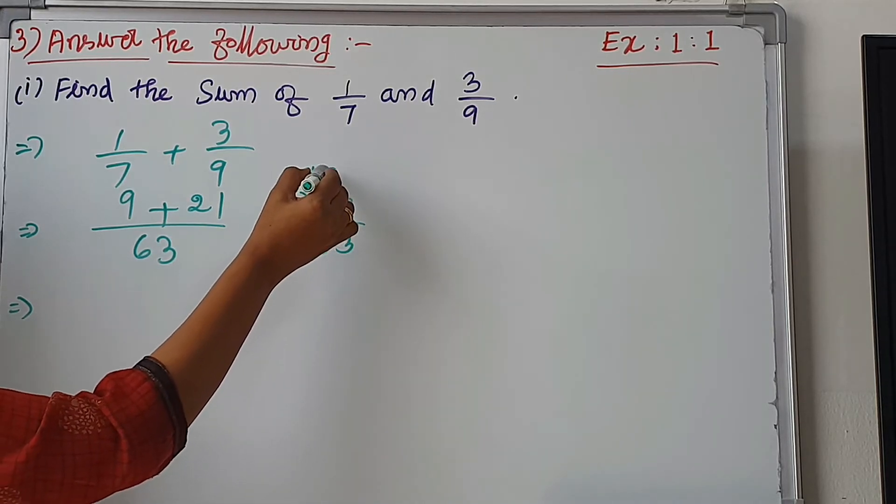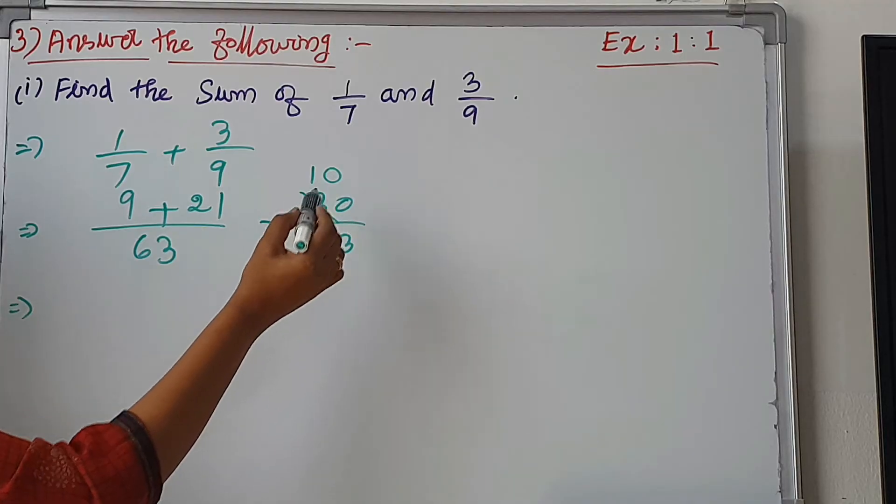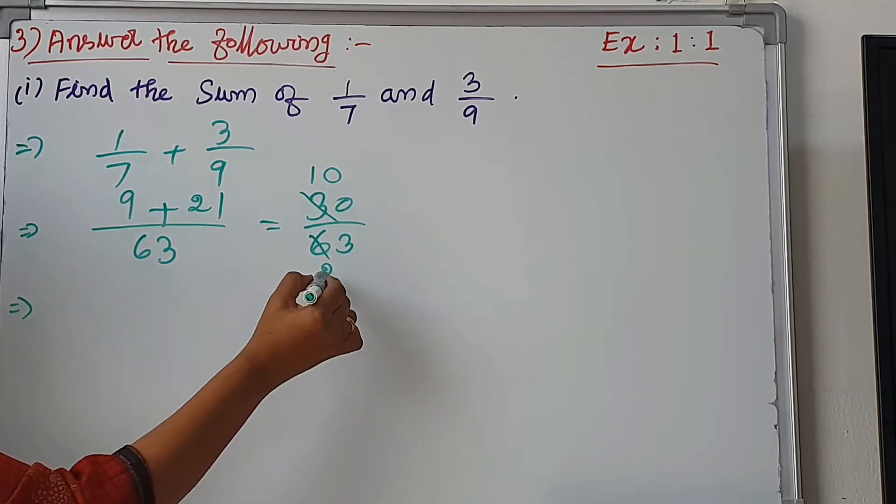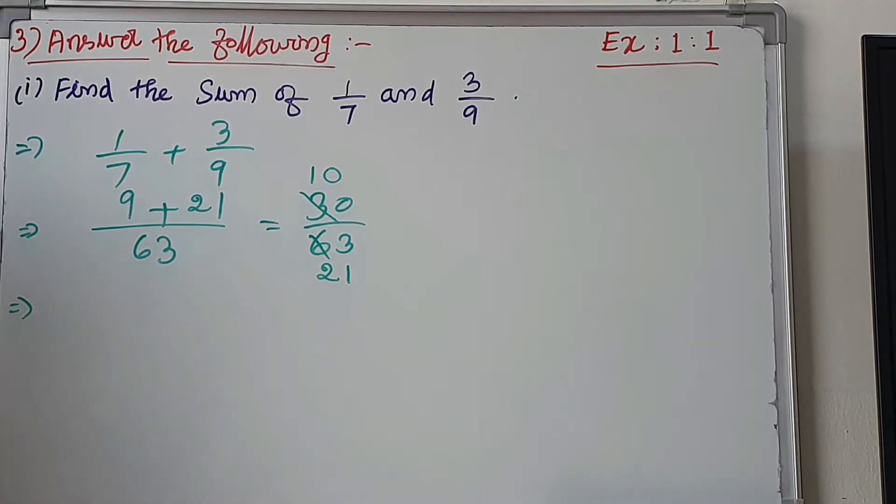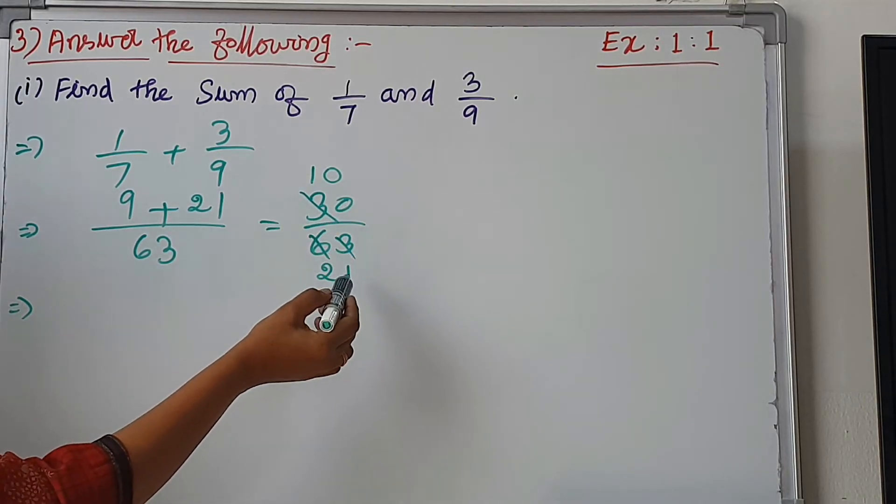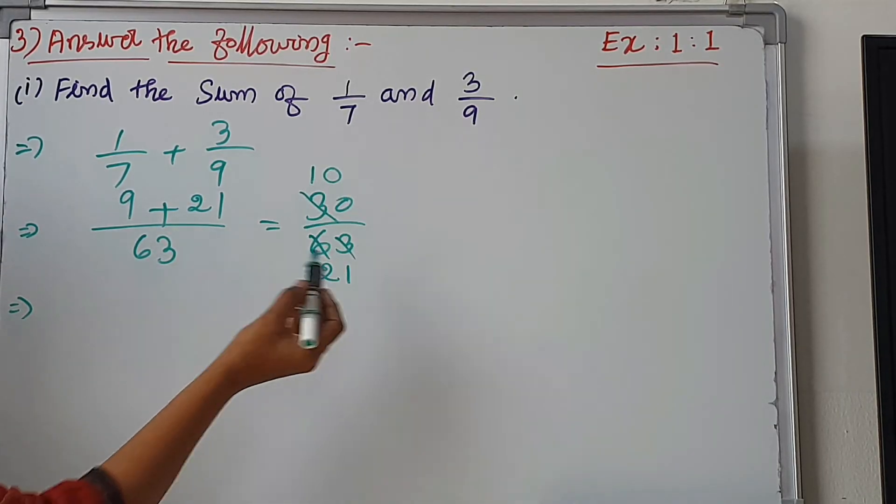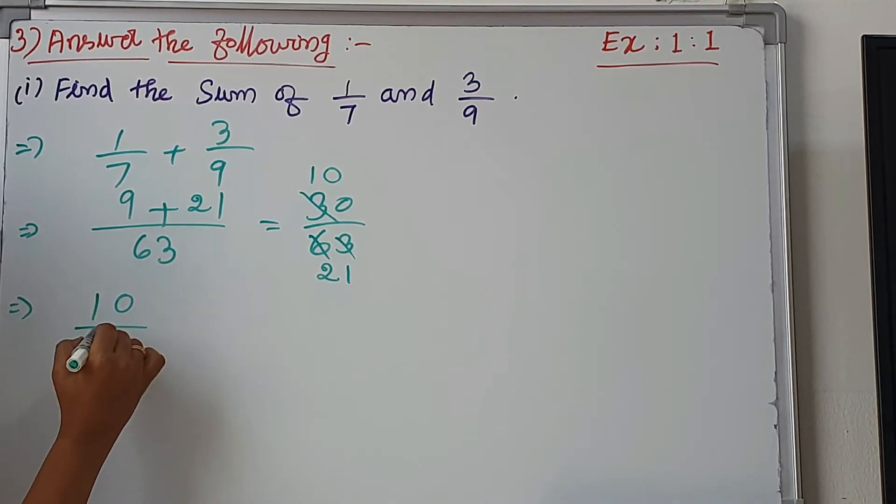1 times 3 is 3. 10. 10 times 3 is 30. 2 times 3 is 6. 1 times 3 is 3. Now 30 divided by 63 is 10 divided by 21.